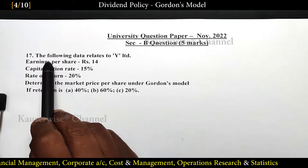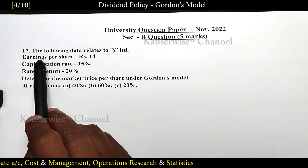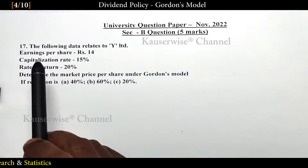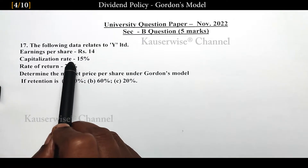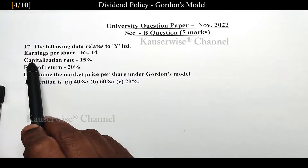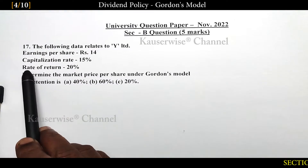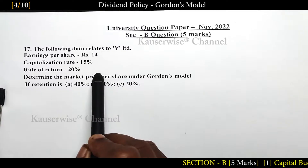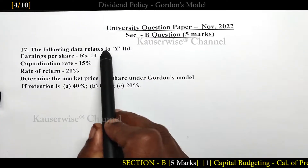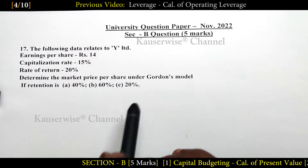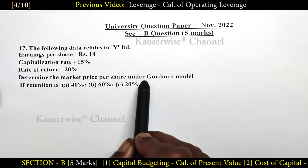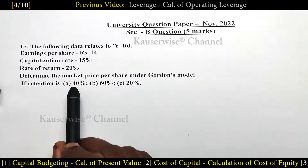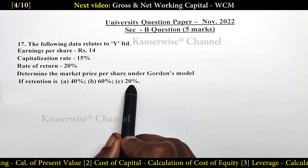See the problem. The following data relates to Y Limited: Earnings per share (E) = ₹14, Capitalization rate (K) = 15%, and Rate of return (R) = 20%. With this information, they are asking us to calculate the market price per share under Gordon's model if retention is 40%, 60%, and 20%.